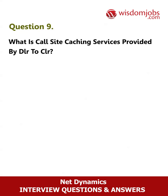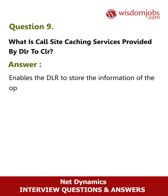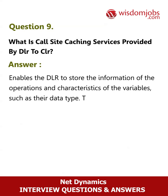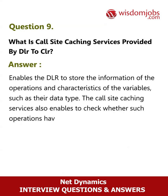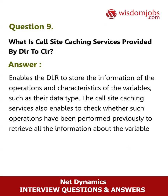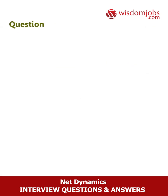Question 9: What is call site caching — a service provided by DLR to CLR? Answer: Call site caching enables the DLR to store information about operations and characteristics of variables, such as their data type. It also enables checking whether such operations have been performed previously to retrieve all information about the variable. The place where DLR stores these values is called a call site.